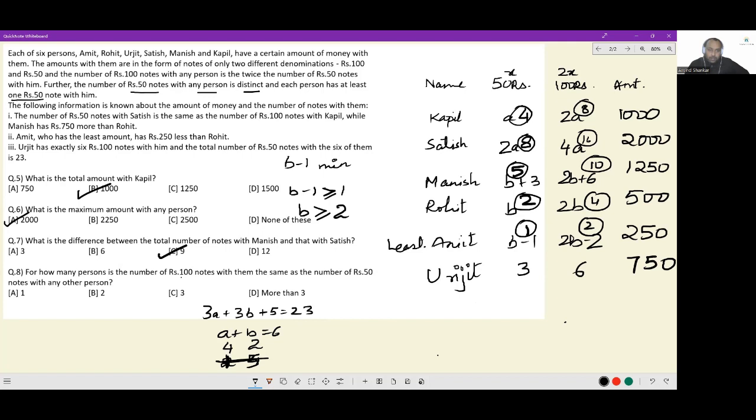For how many persons is the number of 100 rupees notes with them the same as the number of 50 rupees notes with any other person? Yes. Does someone have 6 fifty rupees notes? No. Does someone have 2 fifty rupees notes? Yes. Does someone have 4 fifty rupees notes? Yes. Does someone have 10 fifty rupees notes? No. Does someone have 16 fifty rupees notes? No. Does someone have 8 fifty rupees notes? Yes. So for three people, Kapil, Rohit and Amit, the number of 100 rupees notes with them is same as the number of 50 rupee notes with somebody else. So the answer here has to be option C and that is the entirety of this set.